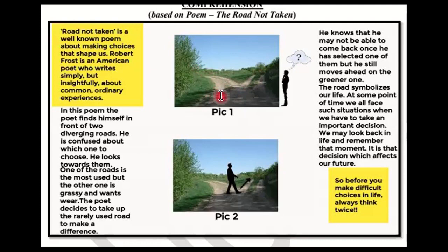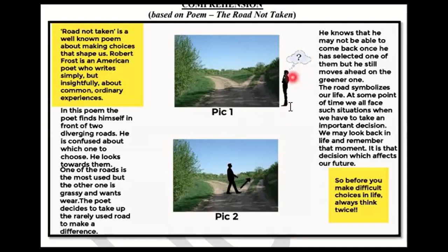You can see that fewer people have been walking down one of the roads — there is also grass there, which suggests fewer people walk that way. On the side, there is a picture of a thinking man — a man who is thinking about it. This man represents the poet, Robert Frost. He looks towards both roads. One of the roads is the most used, but the other one is grassy and wants wear.